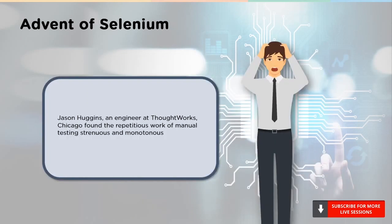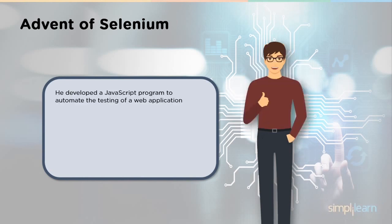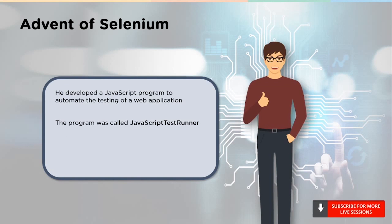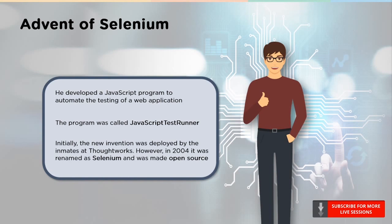Jason Huggins, an engineer at ThoughtWorks, bugged with a strenuous job, decided to try and automate this process. He developed a JavaScript program called the JavaScript test runner. Although initially it was only deployed by employees at ThoughtWorks, it was later renamed as Selenium and was made open source. Since its inception, Selenium has been a powerful automation testing tool to test various web applications.